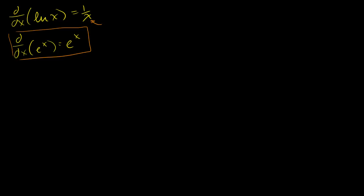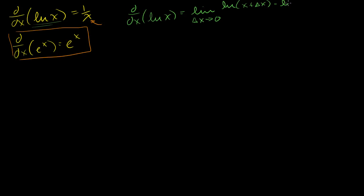So let's start with the proof of the derivative of the natural log of x. We can just go to the basic definition of a derivative. It's equal to the limit as delta x approaches 0 of the natural log of x plus delta x minus the natural log of x, all of that over delta x. Now we can use the property of logarithms: the log of a minus the log of b is the same thing as the log of a over b. So let me rewrite it that way.